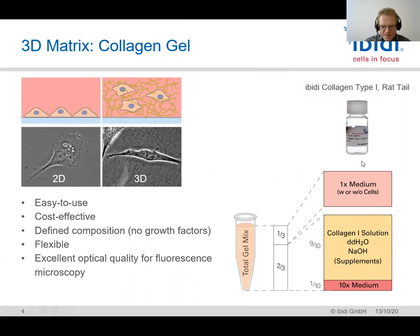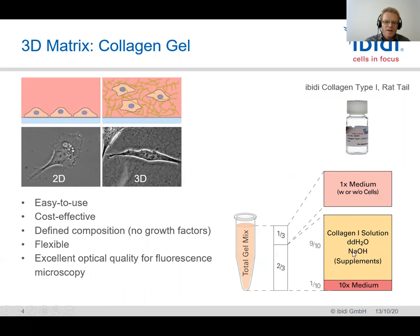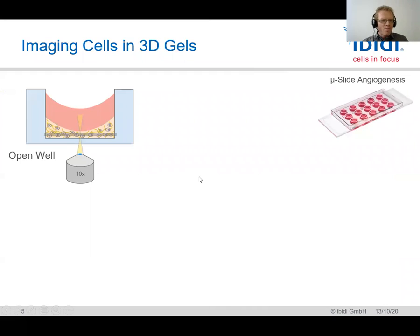It's very easy to do. We have very detailed protocols on the webpage with very detailed instructions. All you need is your cells in suspension, the collagen in solution, cell culture water, sodium hydroxide, supplements if you want, and a 10x medium of your choice. You mix everything together and you end up with a very nice collagen gel, which people normally use in an open well, like a 96-well plate, and then in an open imaging chamber.